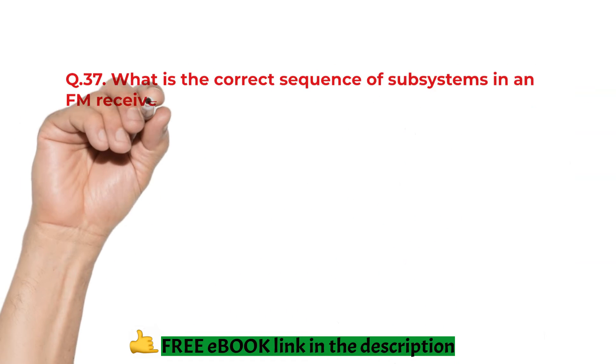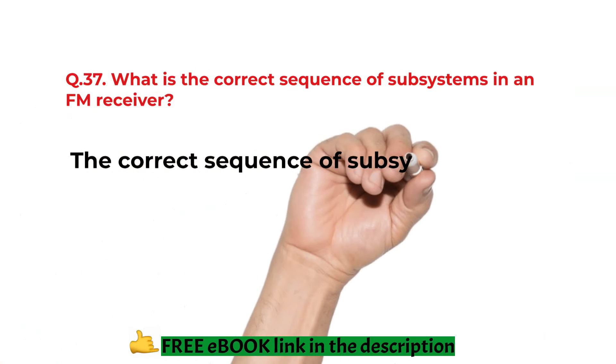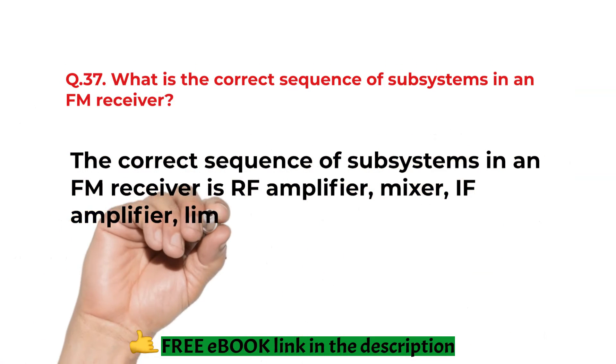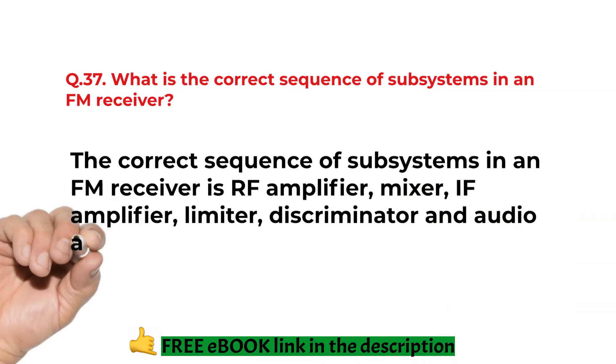What is the correct sequence of subsystems in an FM receiver? The correct sequence of subsystems in FM receiver is RF amplifier, mixer, IF amplifier, limiter, discriminator and audio amplifier.